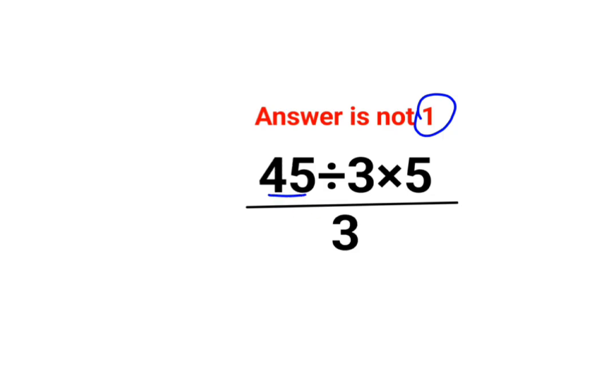right? See, 45 divided by 3 multiplied by 5. So they thought this is so easy. 3 multiplied by 5 is basically 15. So 45 divided by 15 divided by 3. 45 divided by 15 is 3, upon 3, the answer is 1.